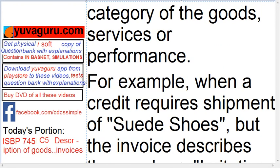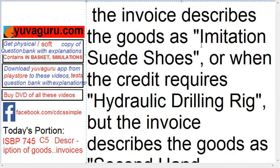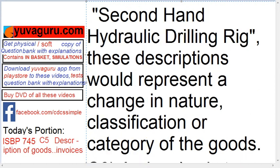For example, when a credit requires a shipment of sewed shoes but the invoice describes goods as imitation sewed shoes, or when the credit requires a hydraulic drilling rig but the invoice describes the goods as a secondhand hydraulic drilling rig — these descriptions would represent a change in nature, classification or category of goods.